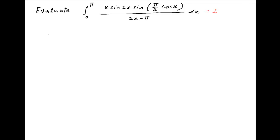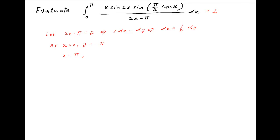Let's denote the given integral by I. Let's substitute 2x minus π equal to y. Taking the derivative of both sides we get 2dx equal to dy, or dx equal to half of dy. When x is equal to 0 (the lower limit), y equals minus π; when x equals π (the upper limit), y equals plus π. Since y equals 2x minus π, x equals (y + π)/2, which equals π/2 plus y/2.